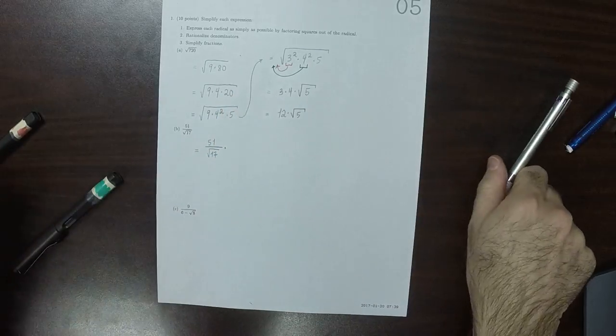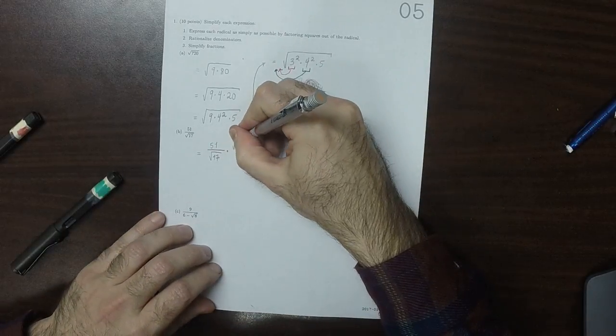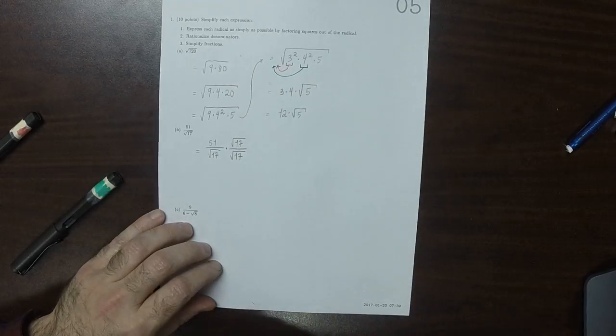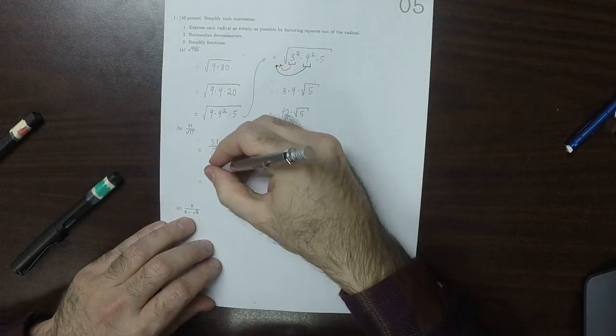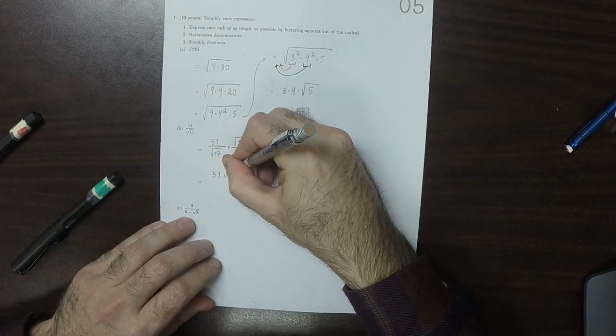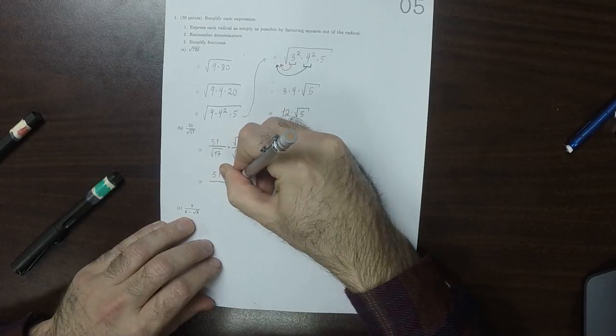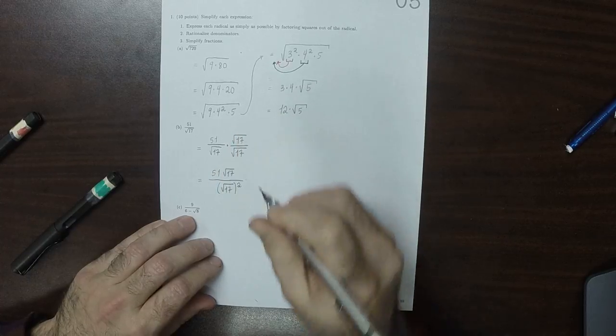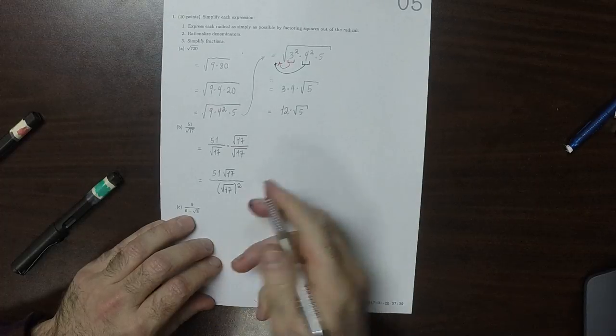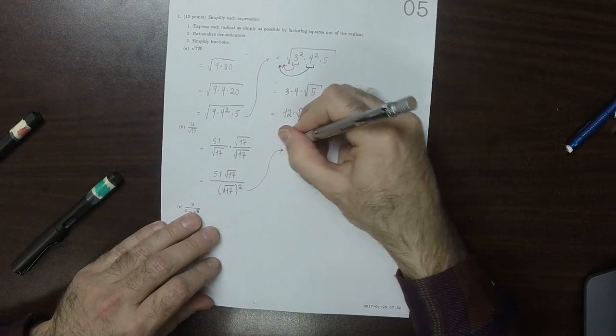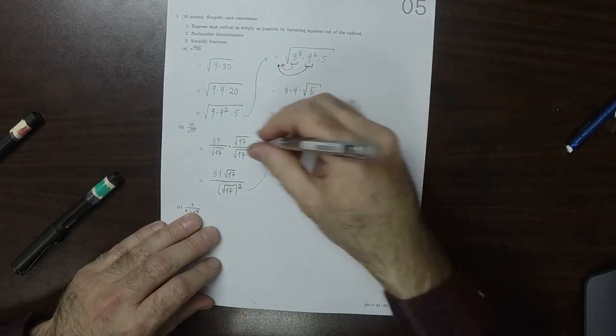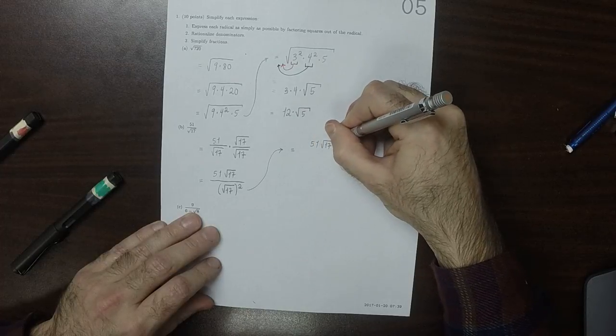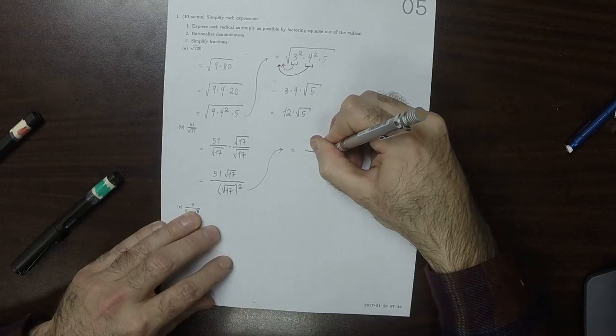And to make it right, we're going to multiply by square root 17 divide by square root 17. So this is 51 square root 17 in the numerator and in the denominator, that's square root 17 squared. But the square root of 17 squared is just 17, which was the whole point of multiplying by square root 17 over square root 17. So 51 square root 17 divided by 17.